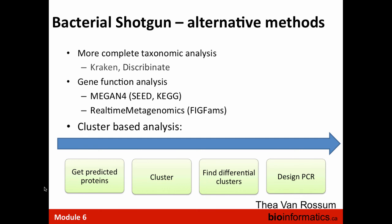Alternative methods include more complete taxonomic analysis using tools like Kraken, gene function analysis using MEGAN and the KEGG database to identify enzymes or functions specific to your sample, and real-time genomics using FIGfams from the SEED database. A cluster-based approach can also be used — perform clustering, find gene clusters, design PCRs against all genes within clusters — giving a more complex readout potentially involving multiple markers.